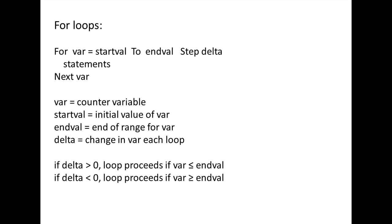If delta is negative, the loop will proceed if var is greater than or equal to endVal. If the initial value of var is greater than or equal to endVal, the statements inside the loop are executed. However, if var is less than endVal, VBA will skip the loop. When the loop reaches the next var statement, var is decreased by delta and VBA returns to the top of the loop. If var is still greater than or equal to endVal, the statements in the loop will be executed again with the updated value of var. This looping process is repeated until var is less than endVal, at which time the loop is terminated.